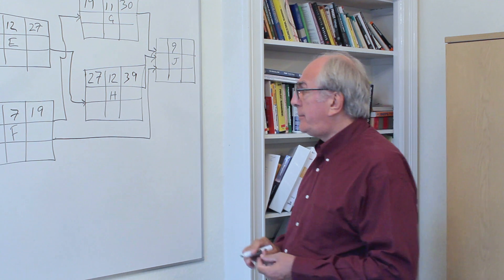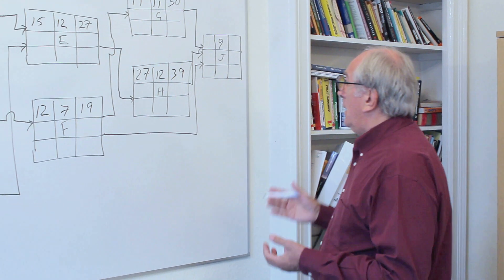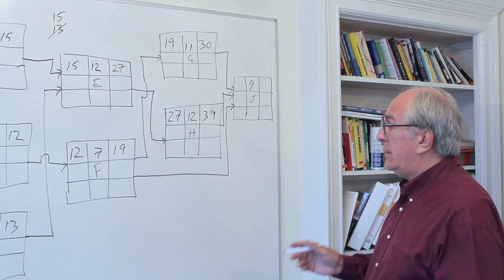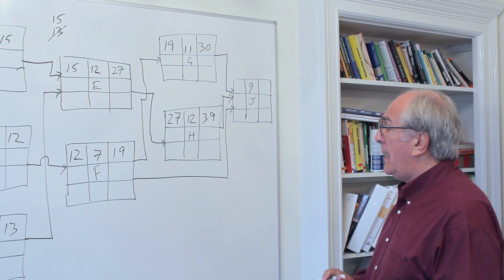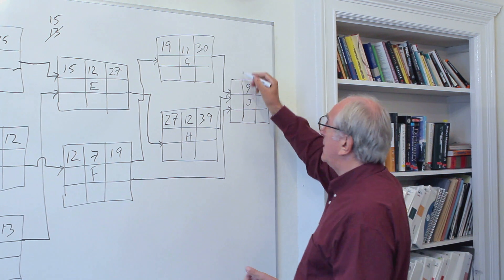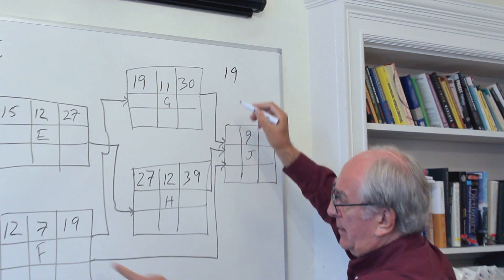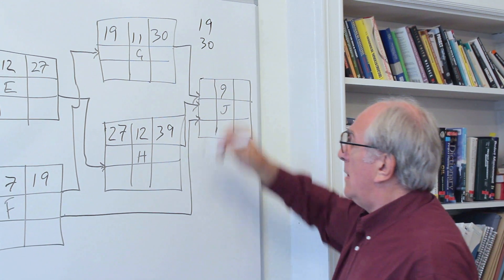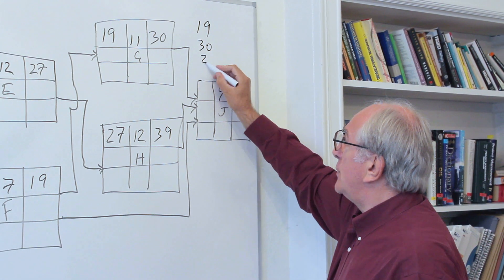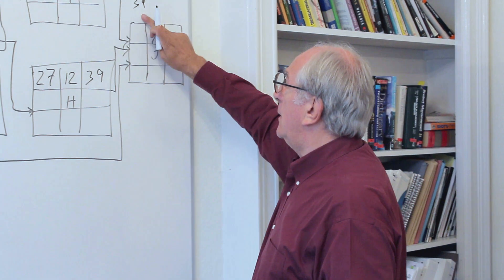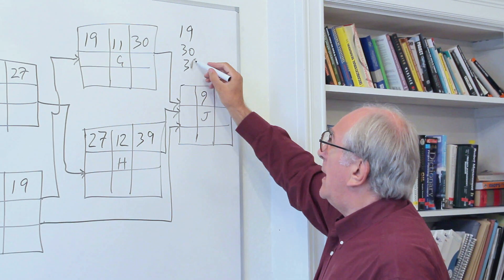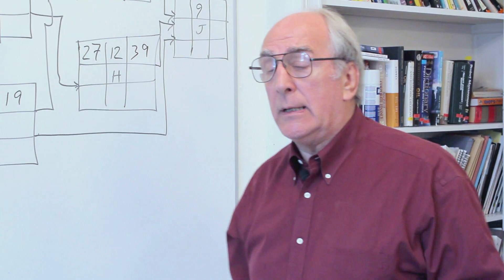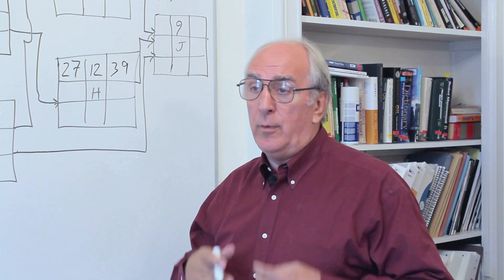For activity J, the start of activity J is constrained by three activities: F, G, and H. So that means our choices are 19, the late finish of F, 30, the late finish of G, or 39, the late finish of H. That example that we used earlier was when we had a choice we took the maximum.